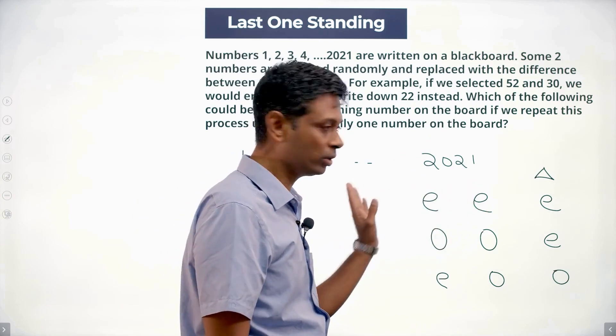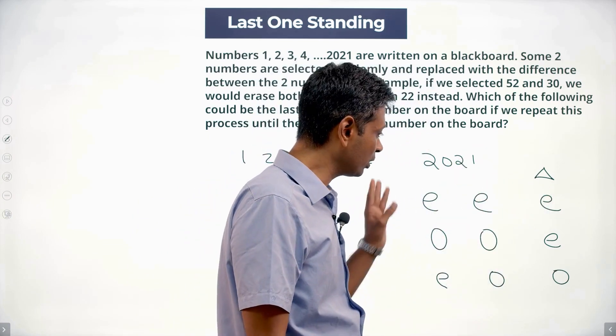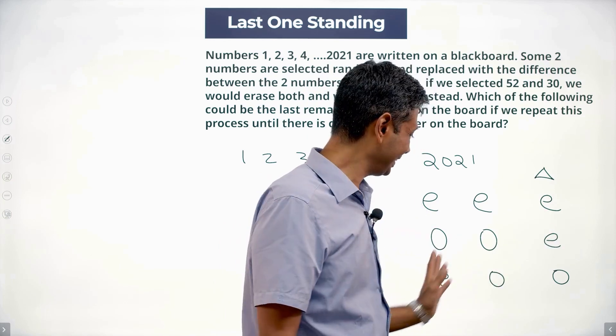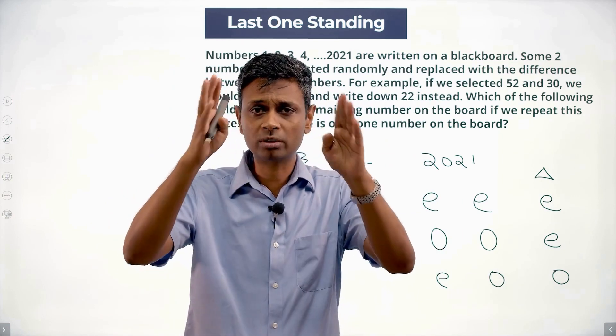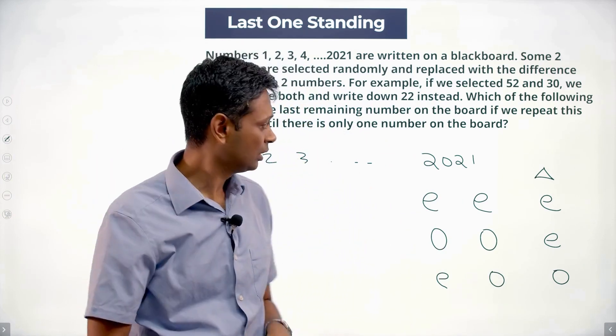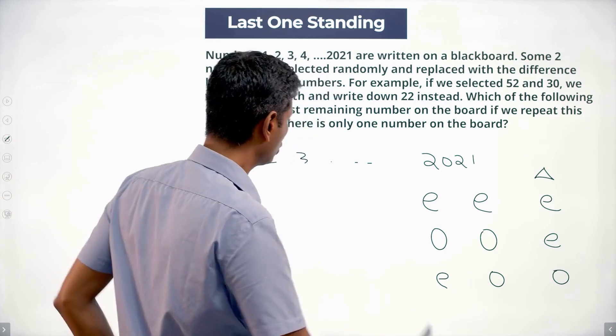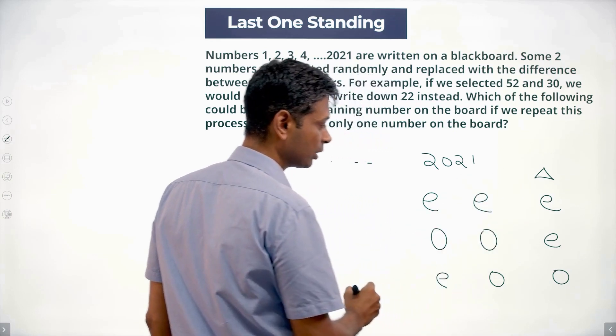So I'm taking these out and replacing it with an even number. Taking these two out, replacing it with an even number. Taking these two out, replacing it with an odd number. I'm only thinking about even numbers and odd numbers. I'm not thinking about the magnitude at all. Now what happens to the total number of numbers?